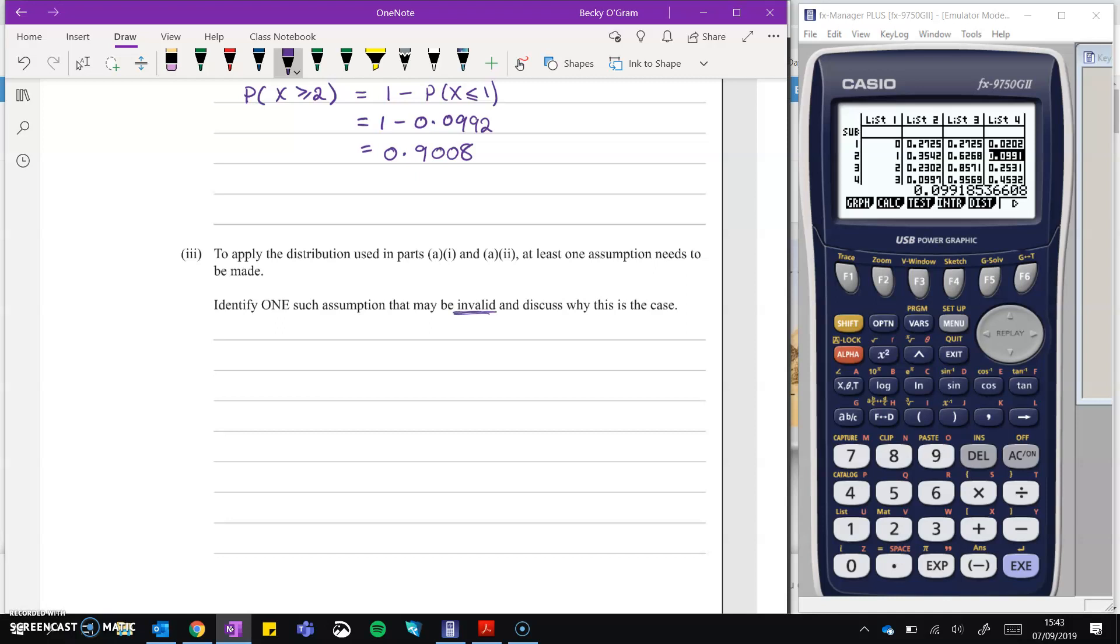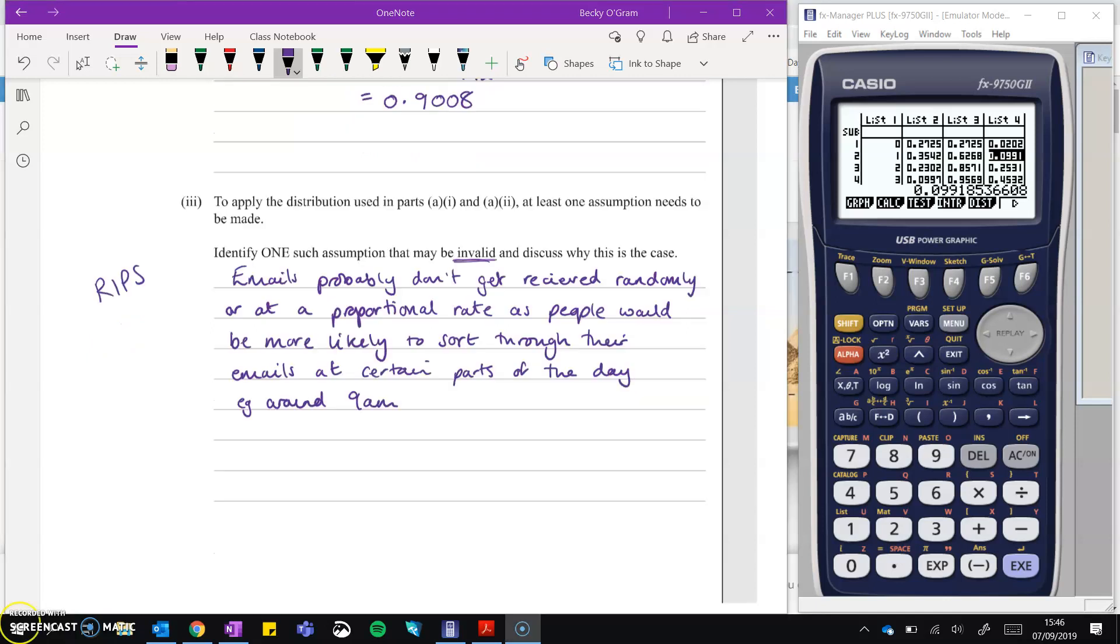So for a Poisson distribution to be valid, it needs to follow that RIPs acronym: random, independent, proportional, singly. So we can think of a reason why. We could probably actually think of a reason why it wouldn't fit each of those four. But we'll just take the first one. So the random thing is that emails being sent or received is probably not random. You're probably more likely to get emails being sent at the beginning of the day as people sit down to their computer and sort things out, or maybe just after lunchtime, or at the end of the day where they're trying to send things off before going home, and that kind of thing. So I've just written that up there, or something along those lines.